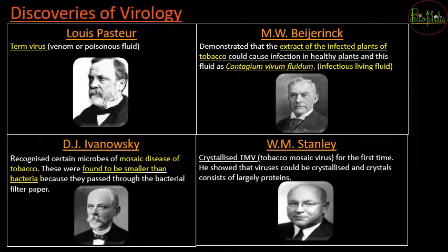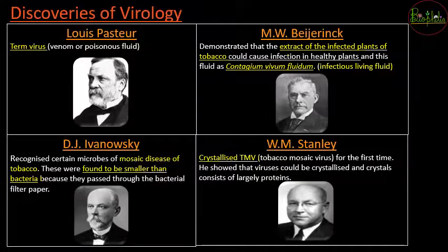VM Stanley was the person who first crystallized the tobacco mosaic virus, showing that viruses can be crystallized and are composed of large proteins. The proteins crystallize, and that crystallization was first done on tobacco mosaic virus by VM Stanley. These four scientists - Pasteur, Ivanowski, Beijerinck, and Stanley - are the names to remember in virology.